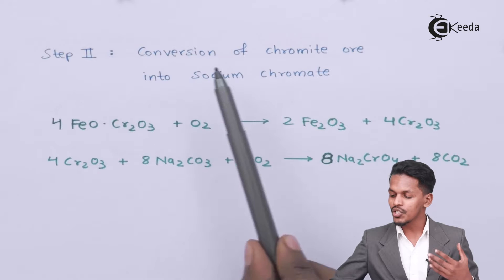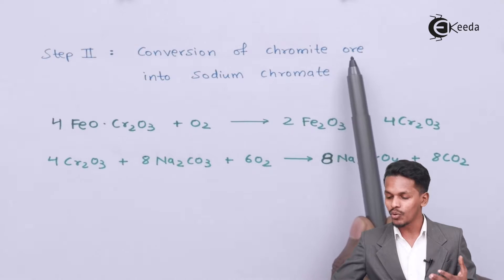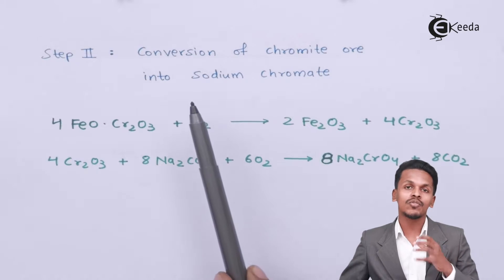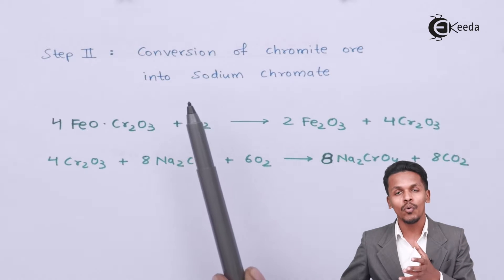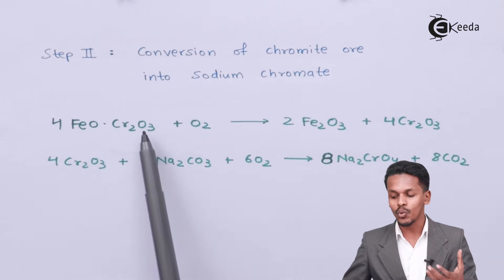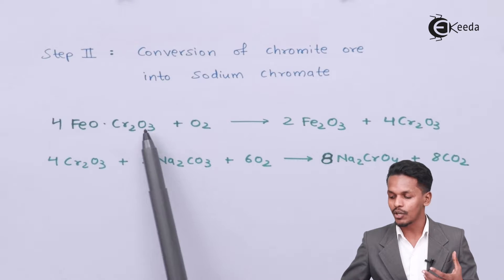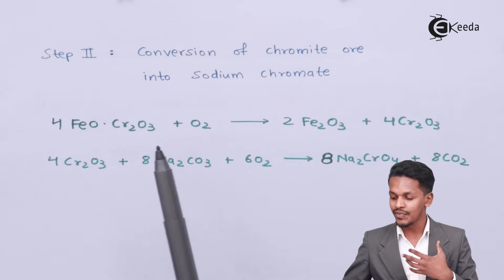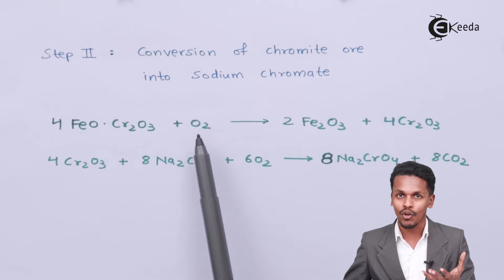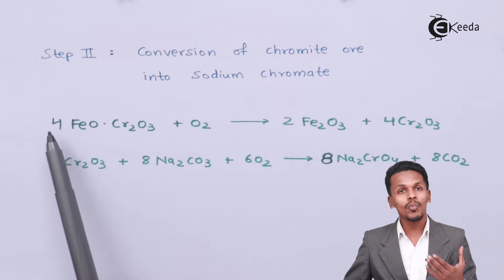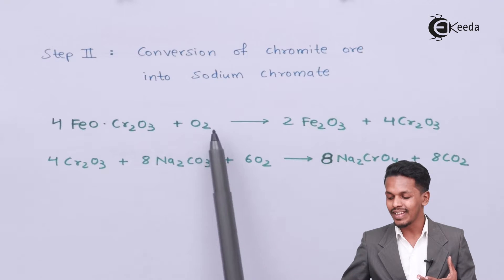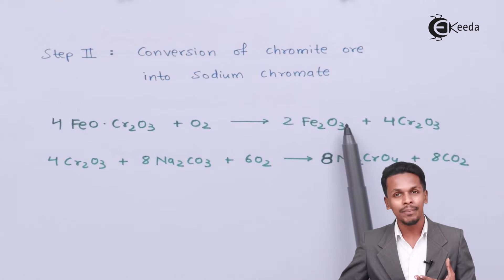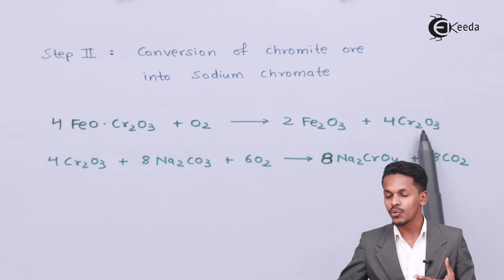The second step is conversion of chromite ore into sodium chromate. The chromite ore obtained after concentration — FeOCr₂O₃ — undergoes a roasting process, where it is heated in the presence of excess oxygen. In this reaction, 4 moles of FeOCr₂O₃ react with oxygen to form Fe₂O₃ along with 4 moles of Cr₂O₃.